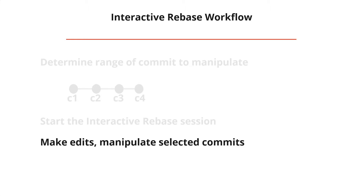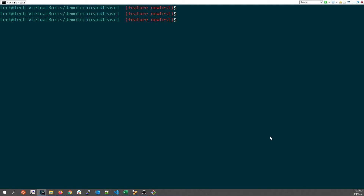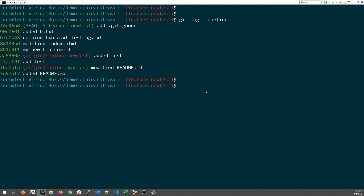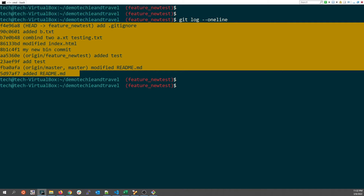Let's look at the git command line and work on interactive rebase. We'll do two things in this tutorial: first, change an old commit message using reword, and second, combine two sets of commits into a single commit. Here I'm in my feature branch, and the first thing I want to do is look at the git log to see the series of commits.